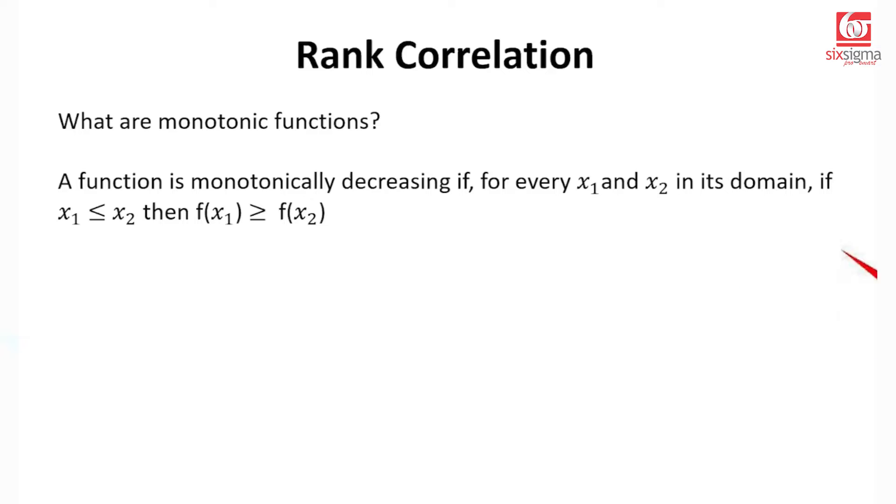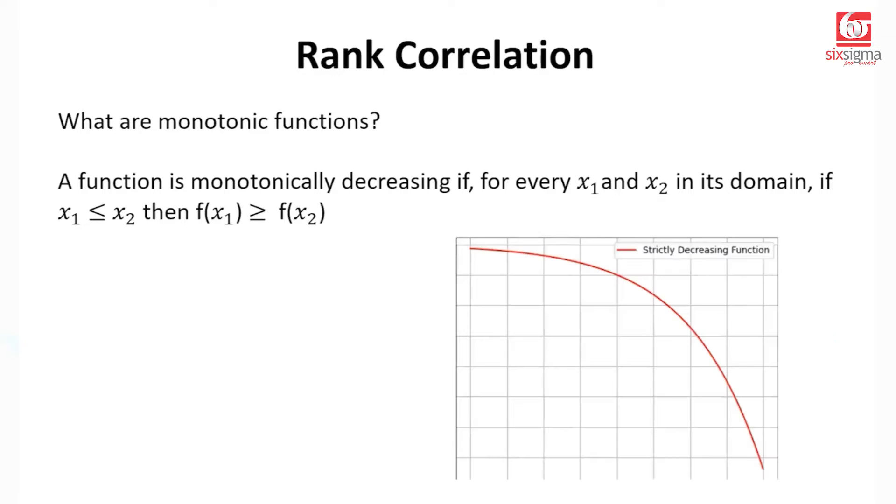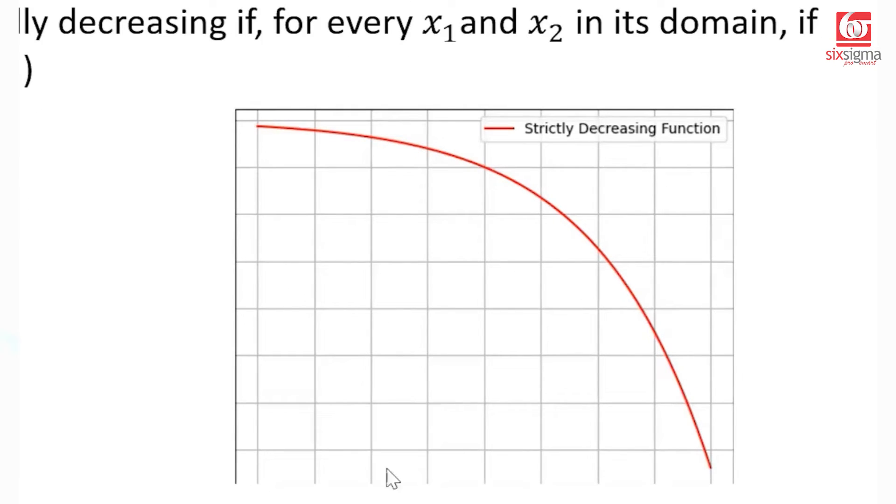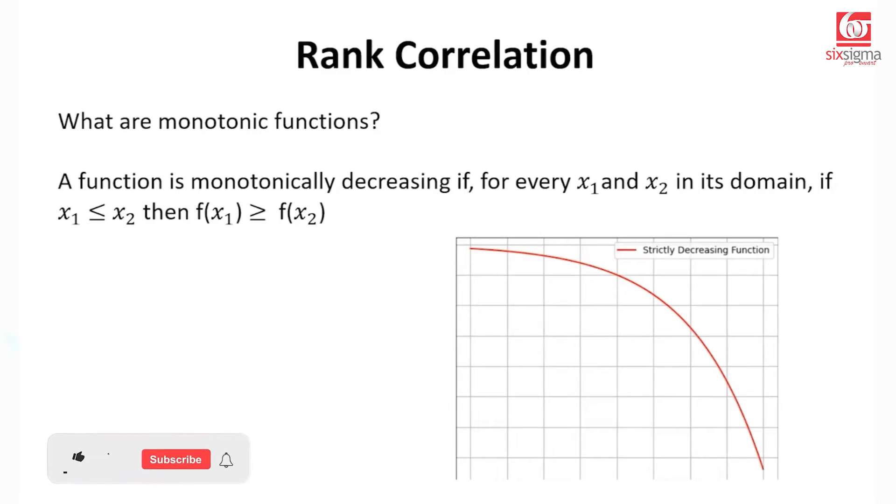Likewise, we have monotonically decreasing functions. In this case, for every x1 which is less than or equal to x2, f(x1) is greater than or equal to f(x2). So we are talking about decreasing functions. For every value on x-axis as the values of x increase, the value of y is only decreasing. Spearman's rank correlation particularly is helpful when your variables exhibit a monotonically increasing or decreasing relationship.